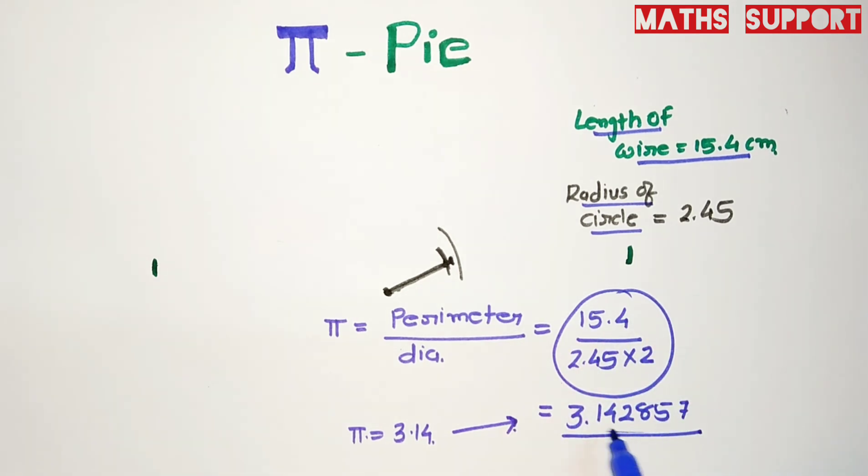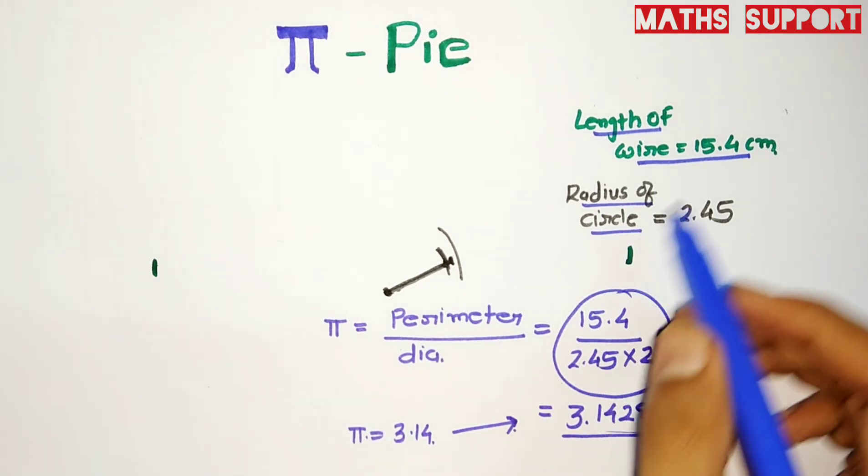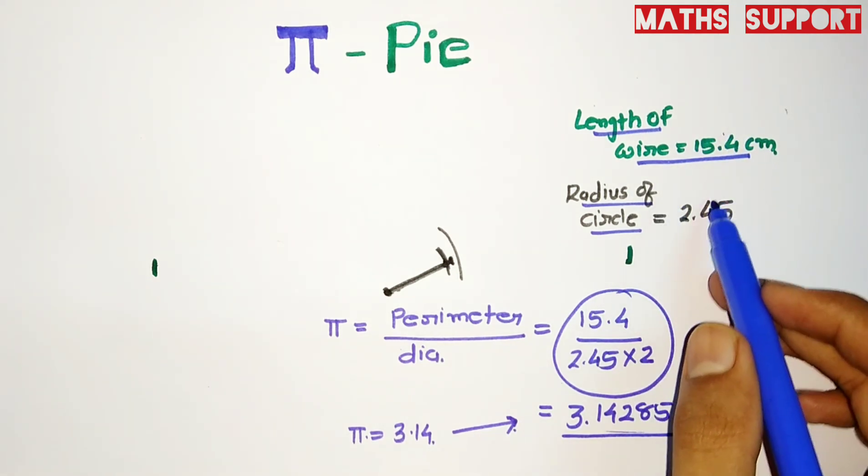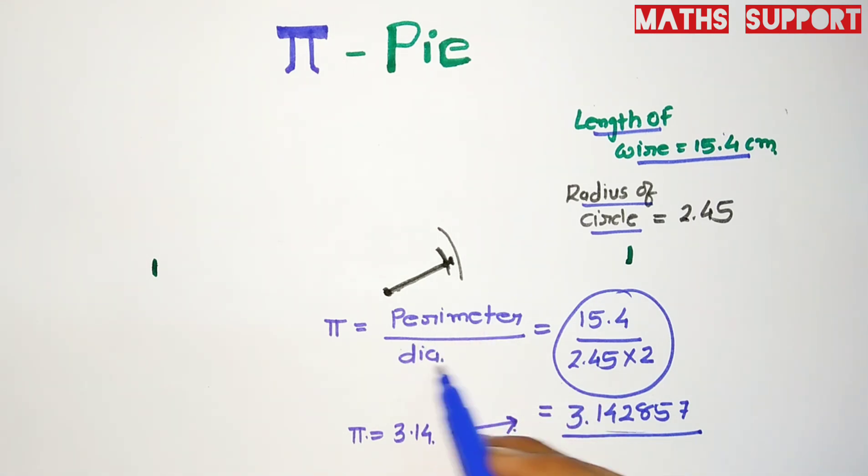I am getting the value of pi. Even if you take a different length of wire, you will get a different perimeter and radius. Though you get different parameters, the value of this ratio - perimeter over diameter - will always be equal or the same, that is 3.14.